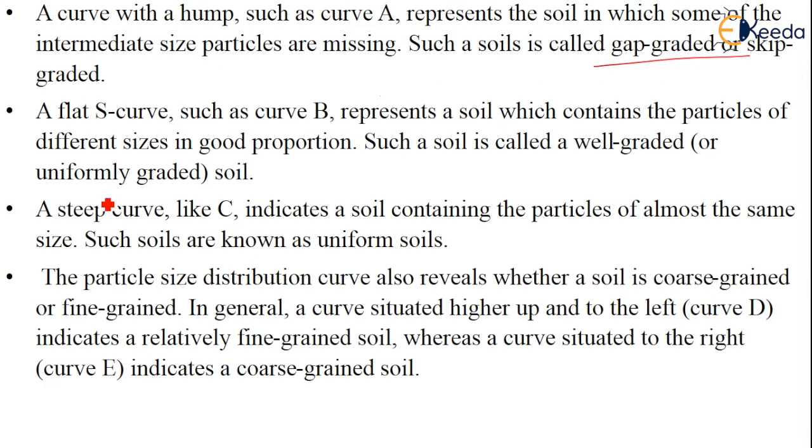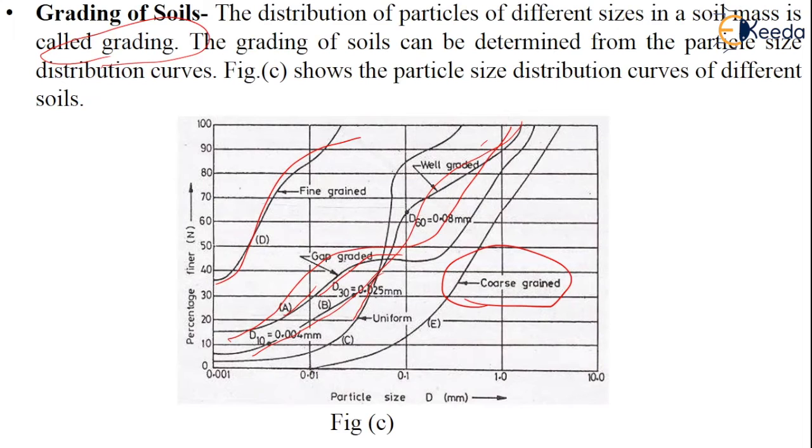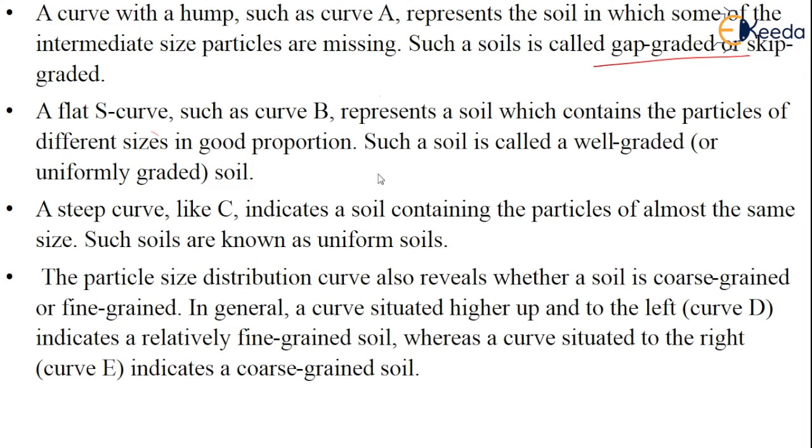Coming to the flat S curve such as B, the curve B represents a soil which contains the particles of different sizes in a very good proportion. Such soil is known as well graded or it can also be called uniformly graded soils.